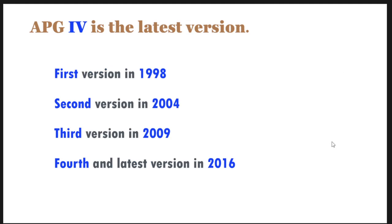The APG system first version came in 1998, and the second version came in 2004, the third version in 2009, and the fourth and latest version came out in 2016.